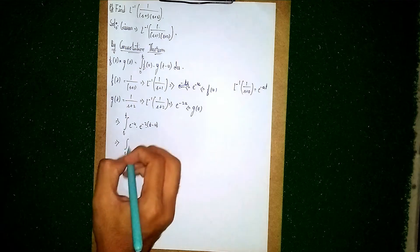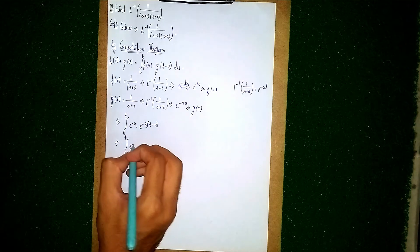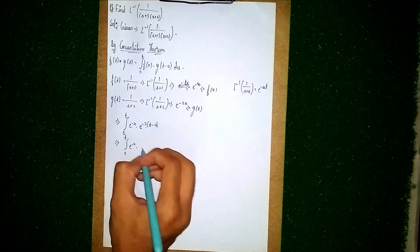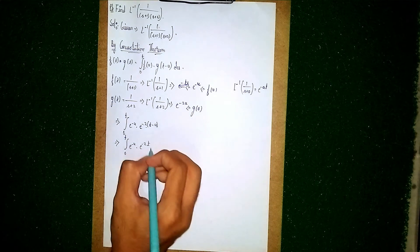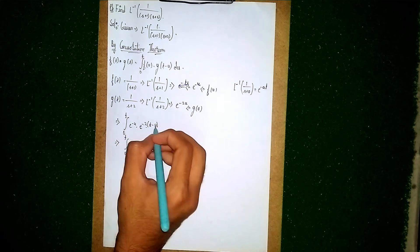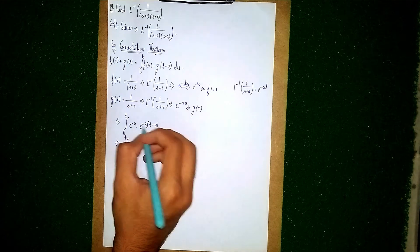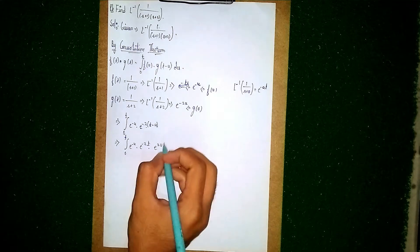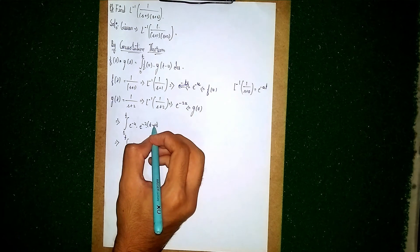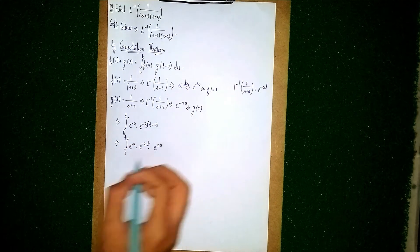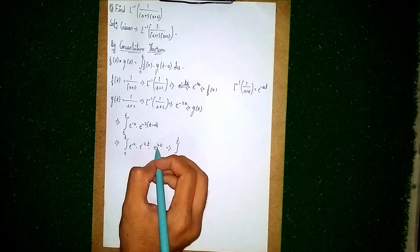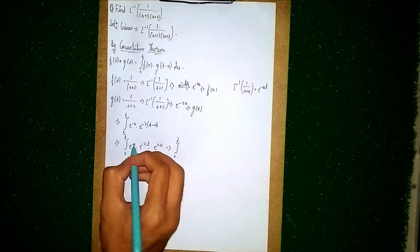Now expand: integral from 0 to t of e to the power minus u, times e to the power minus 2t times e to the power 2u (since minus 2 times minus u gives plus 2u). Combining e to the power minus u and e to the power 2u gives e to the power u. So we have e to the power minus 2t times e to the power u.